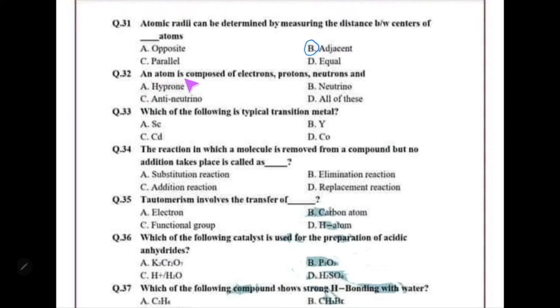An atom is composed of electrons, protons, neutrons, and also includes neutrinos and anti-neutrinos — all of these.